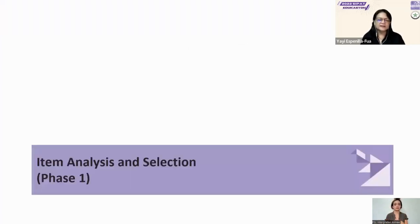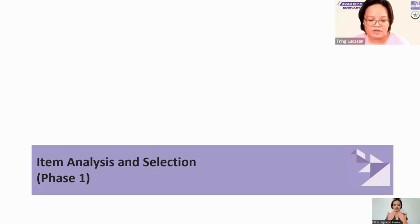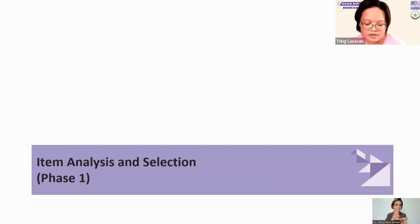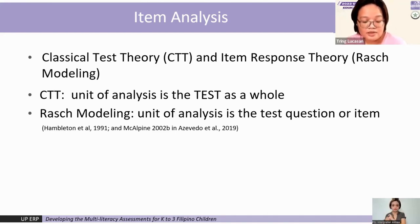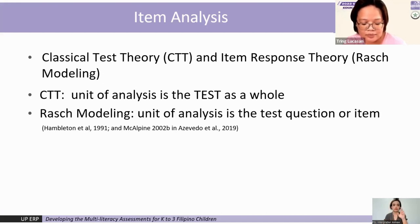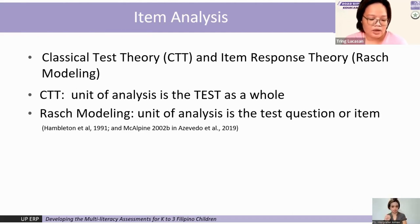For the first phase of item analysis and selection, data obtained from field testing was subjected to item analysis, an important step in finalizing the assessment tool. Item analysis allows us to refine and improve the tests by determining which items performed well and which need revision. We deployed both classical test theory, or CTT, and item response theory, or IRT — specifically Rasch modeling. With CTT, the unit of analysis is the test as a whole, while with Rasch, analysis can be done at the item or question level. Deploying both models allows us to look at each item in relation to the test as a whole.